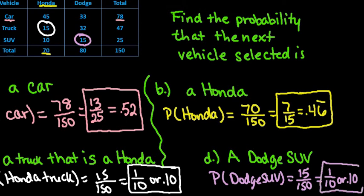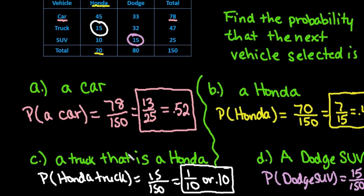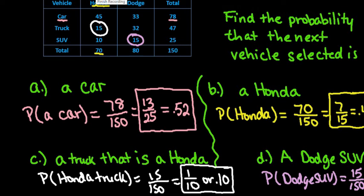To summarize: if you're looking for something in general — like just a car or just a Dodge — you look in the margins. If you're looking for something specific that combines two attributes, like a truck and a Honda or a car and a Dodge, then you look inside the table. Thanks for watching — if you have any questions or additional topics you'd like me to cover, please let me know.